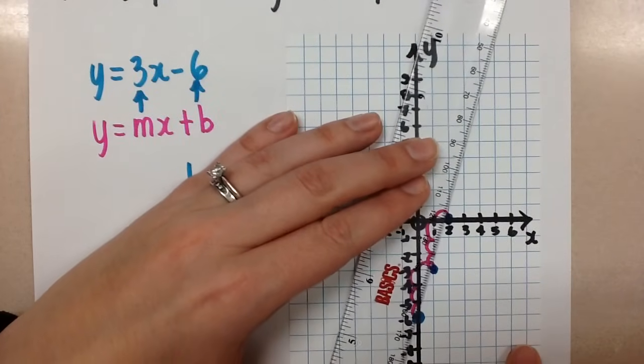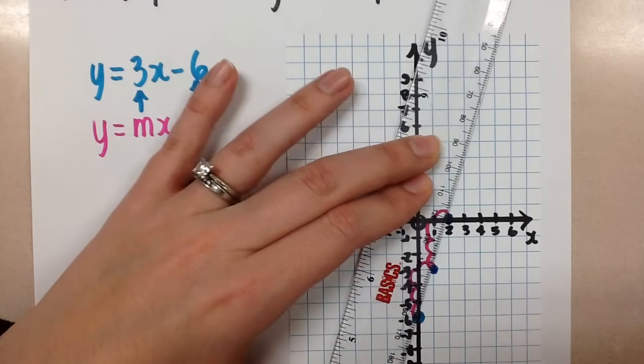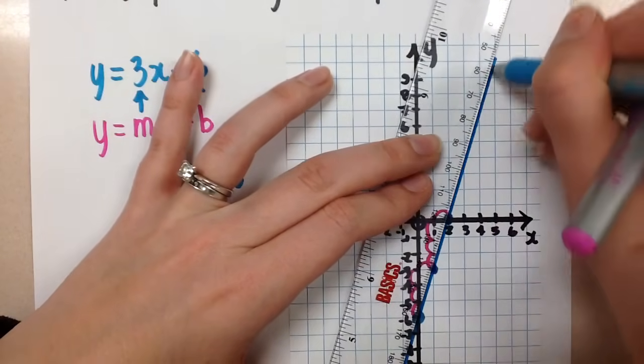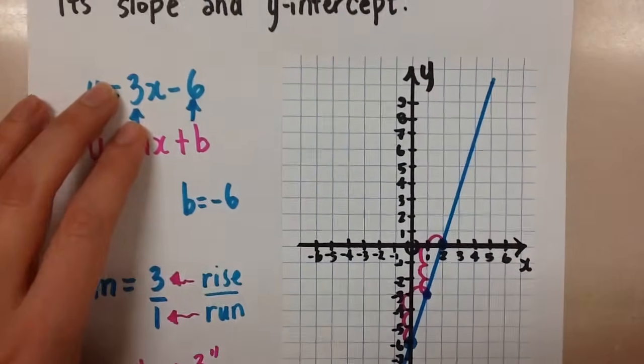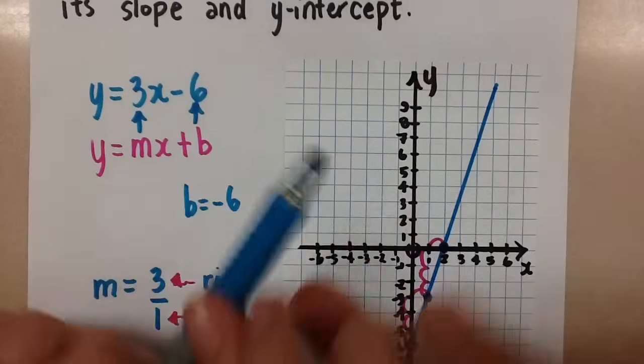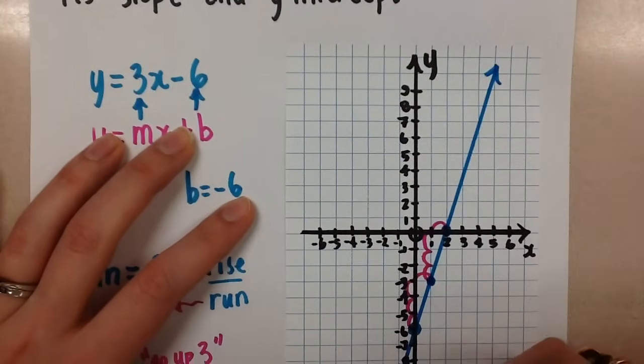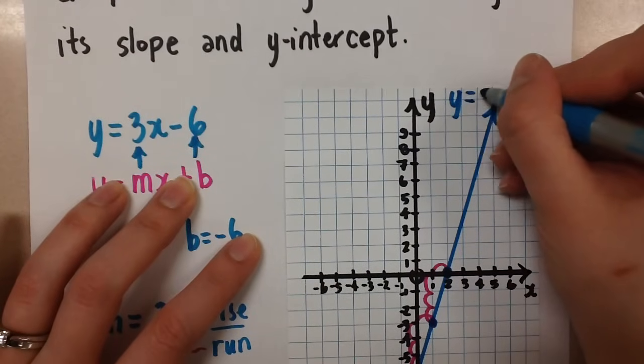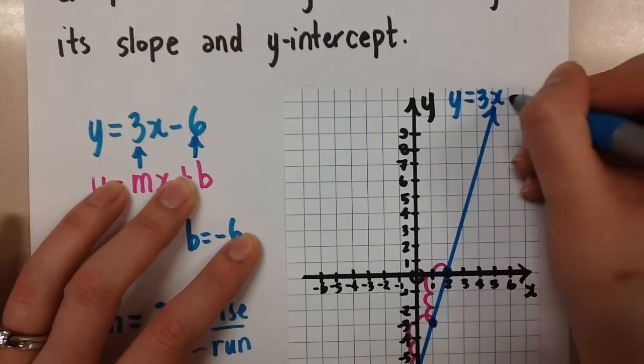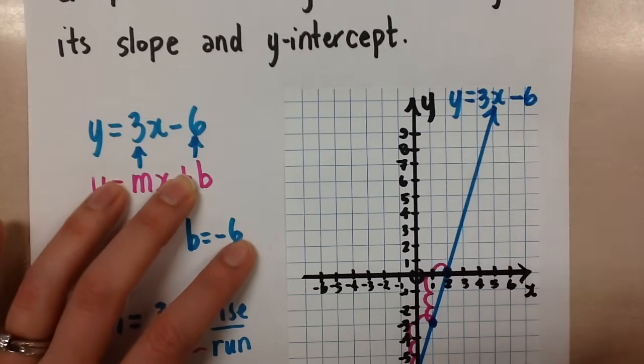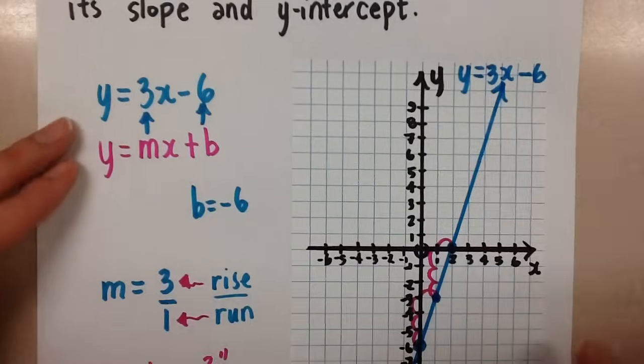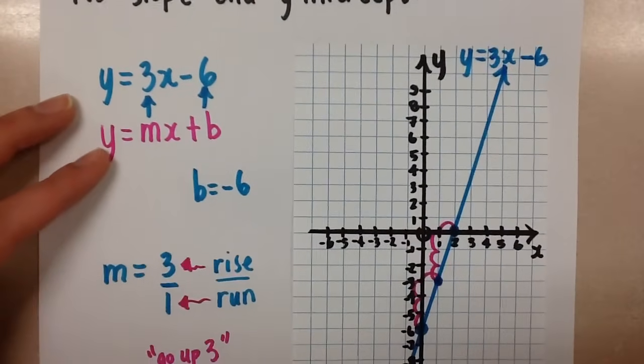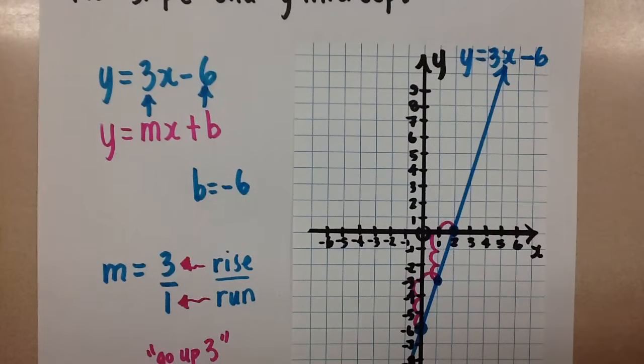So we take our ruler now and try to line these up as best as possible. Draw your line all the way across the grid, nice and long. We'll put arrows because we know this line continues in both directions. And we'll label this y = 3x - 6. That is the graph for this line given to us in slope y-intercept form. Thanks for watching. Mrs. A loves math.